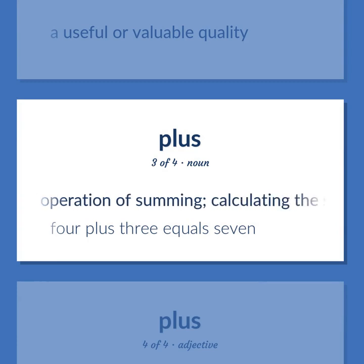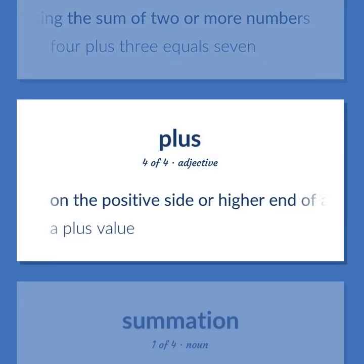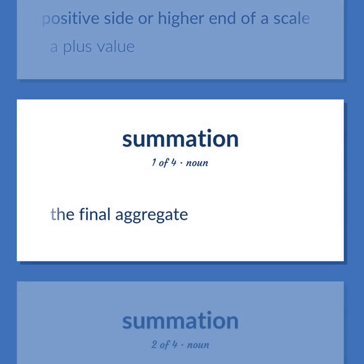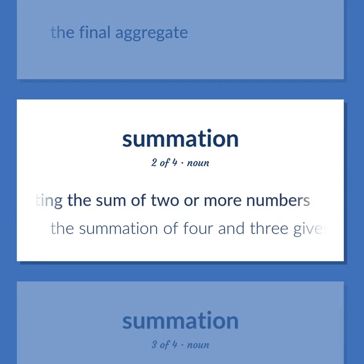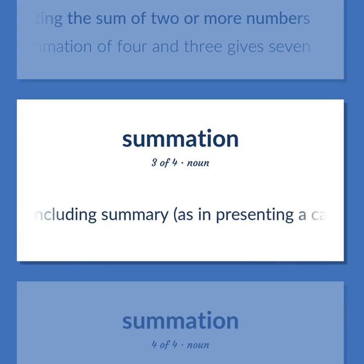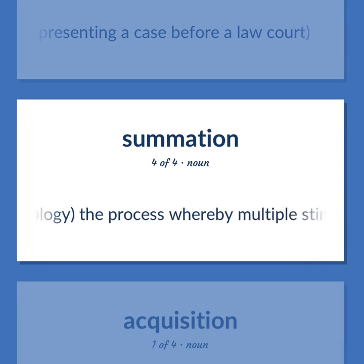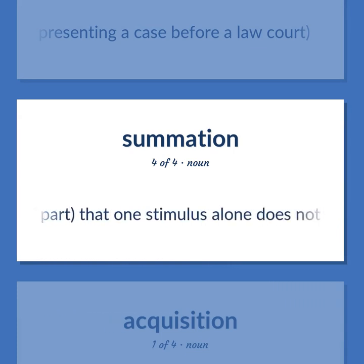Plus: The arithmetic operation of summing; calculating the sum of two or more numbers. Example: 4 plus 3 equals 7. On the positive side or higher end of a scale; a plus value. Summation: The final aggregate. The arithmetic operation of summing; calculating the sum of two or more numbers. Example: The summation of four and three gives seven. A concluding summary, as in presenting a case before a law court. Physiology: The process whereby multiple stimuli can produce a response in a muscle or nerve or other part that one stimulus alone does not produce.